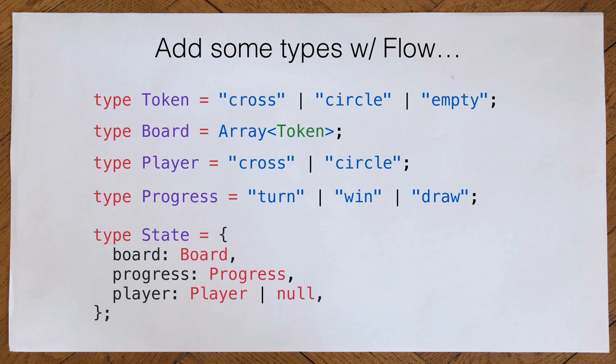Let's make it a little bit more idiomatic with types, adding some Flow types. We define a token which is a union of string literals: cross, circle, and empty. We have a board which is an array of tokens. We have a player with cross and circle, and a progress which is turn, win, or draw. Now we can define our state cleanly with board, progress, and a player. But the player here is either player or null.